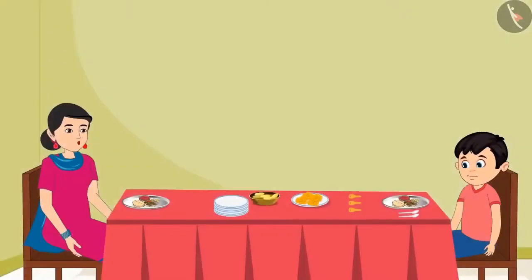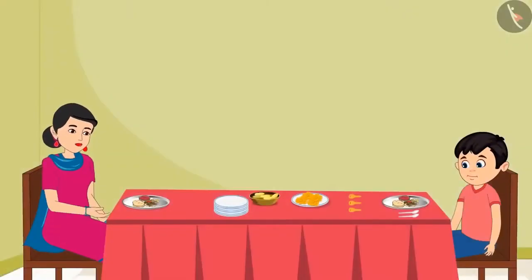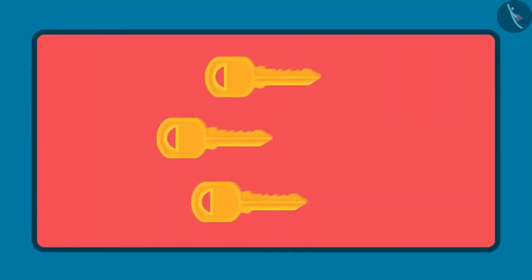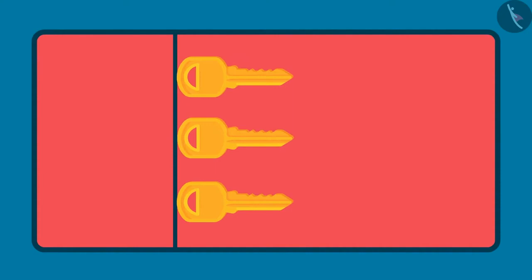Yes Chotu, very good. So kids, now you also won't make a mistake in comparing the length of two or more objects. Always remember: before comparing the length of objects, first keep the objects together so that one end of all the objects is together, and then compare their lengths.